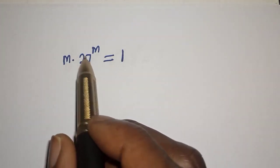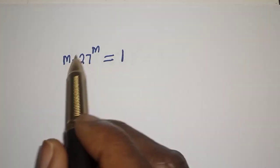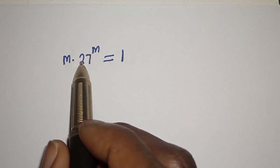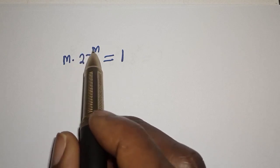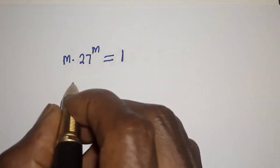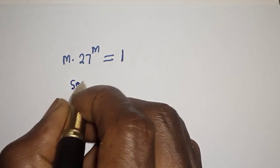Hello, welcome to Magis. In this class I want to find the value of m from this beautiful equation: m multiplied by 27 raised to power m is equal to 1.